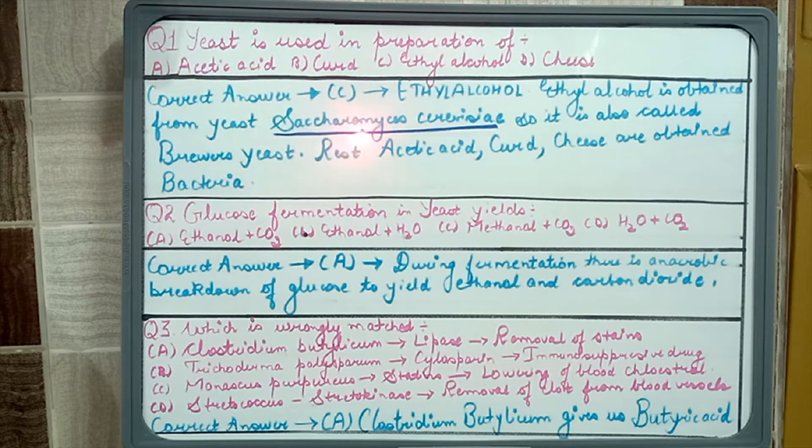This question is directly from NCERT. We know Saccharomyces cerevisiae is called brewer's yeast because it helps in preparation of ethyl alcohol. Now second question that can also be asked is that Saccharomyces cerevisiae is also known as baker's yeast because it is also used in preparation of bread.